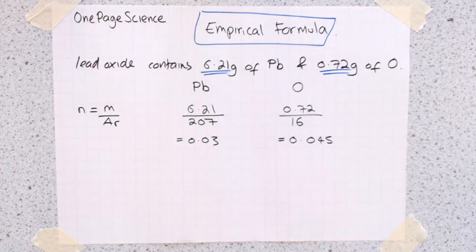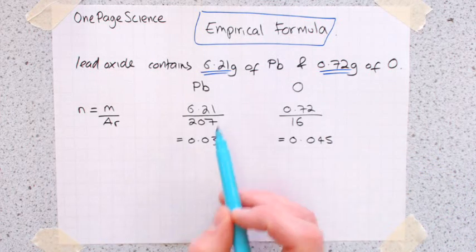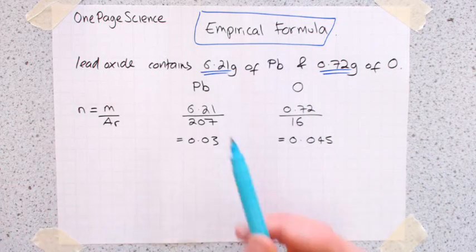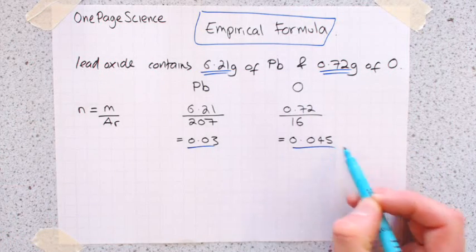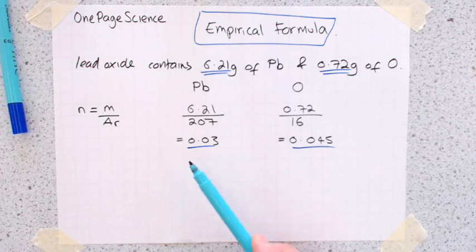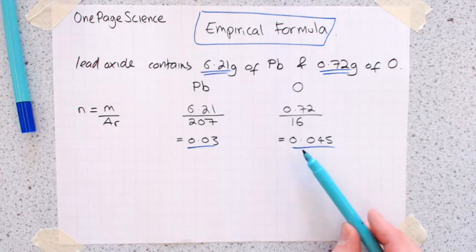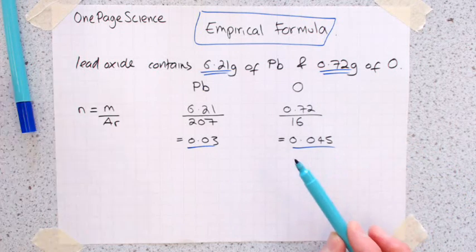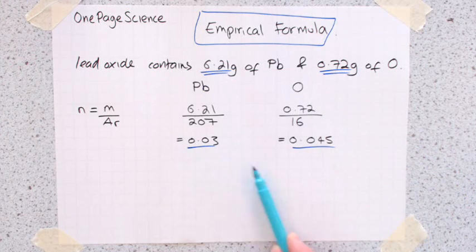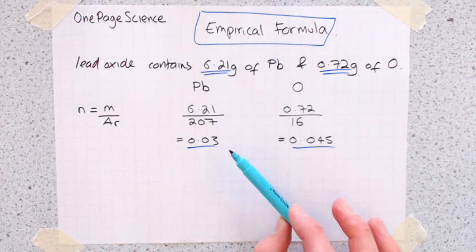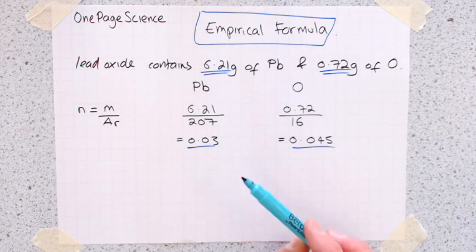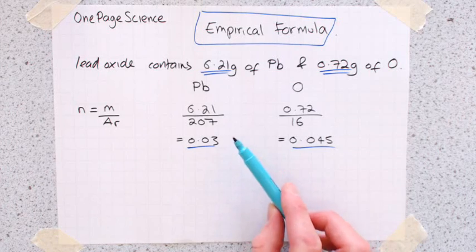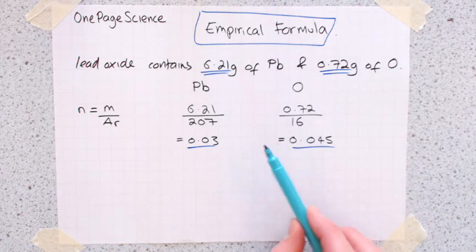So that's now, that's the ratio in terms of mass, this is the ratio in terms of moles. So for every 0.03 moles of lead, I've got 0.045 moles of oxygen. So the challenge now, then, is to get this into a simple whole number ratio. That's the definition for the empirical formula, is the simplest whole number ratio of the elements within a compound.